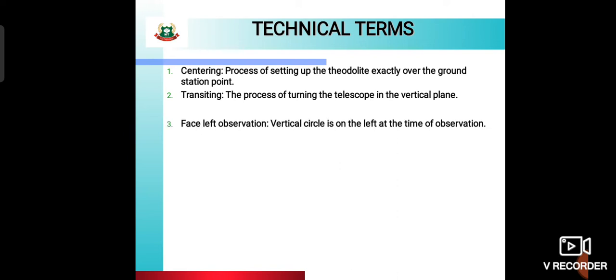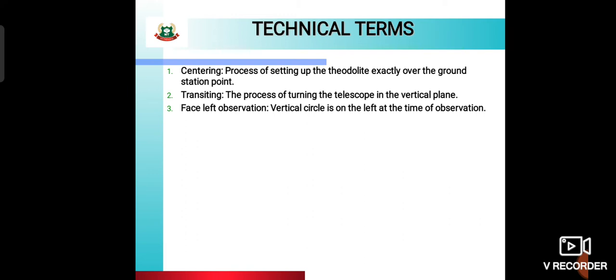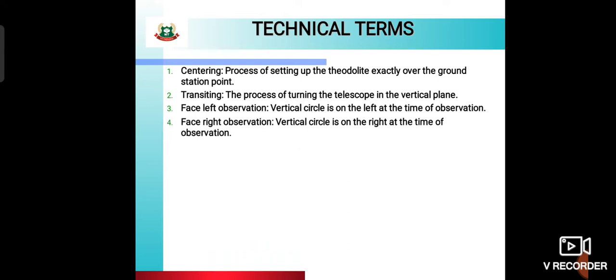Face left observation: when the vertical circle is on the left at the time of observation, it is called face left observation. Face right observation: when the vertical circle is on the right, it is called face right observation.